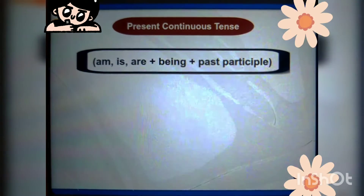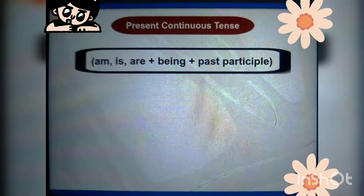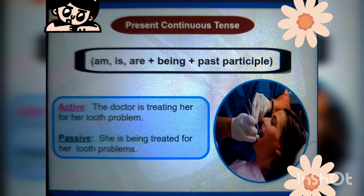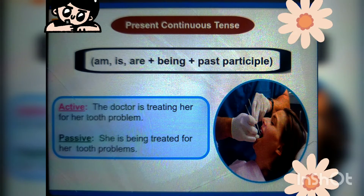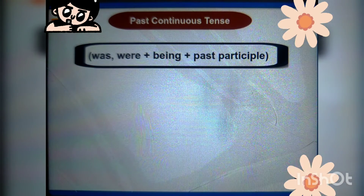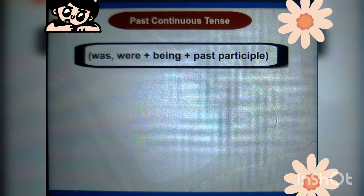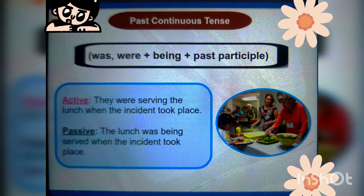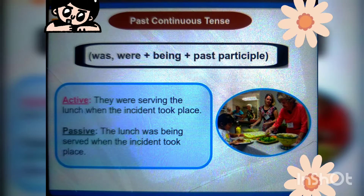Present continuous tense uses 'am/is/are + being + past participle.' Example — 'The doctor is treating her for a tooth problem' becomes 'She is being treated for her tooth problems.' Past continuous tense: 'They were serving the lunch when the incident took place' becomes 'The lunch was being served when the incident took place.'